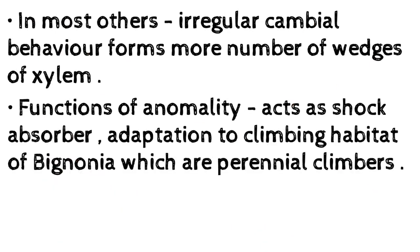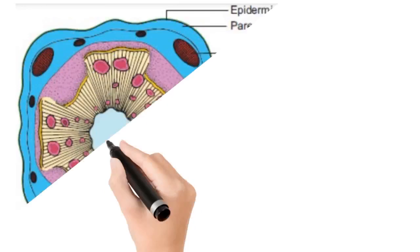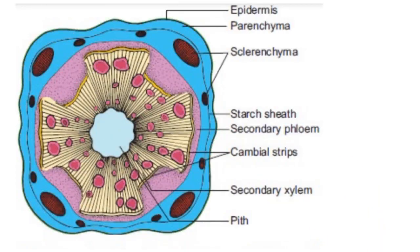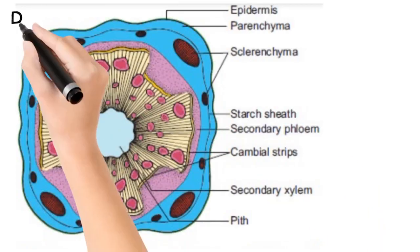In Bignonia the exact example shows four wedges and four ridges. In most others, irregular cambium behavior forms more wedges of xylem. The function of this anomaly is that it acts as a shock absorber — an adaptation to the climbing habitat of Bignonia, which are perennial climbers. Now you have completed one of the important essay questions.